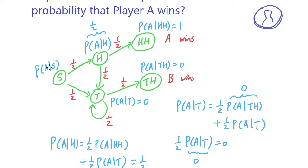The only way for player A to win is really getting that H on the first toss, and then getting an H on the second toss. Any other way, player A is going to lose. That's why player A only wins with probability one fourth.